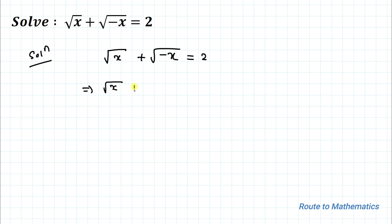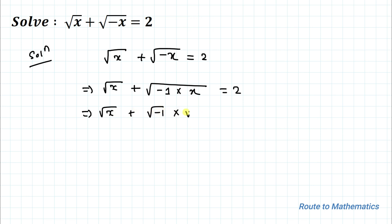So this implies I can write this as root x plus root of minus x, where I can write minus x as minus 1 multiplied with x, which equals 2. This implies root x plus root of minus 1 multiplied with root of x equals 2.